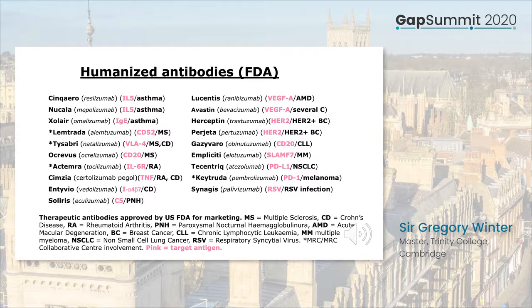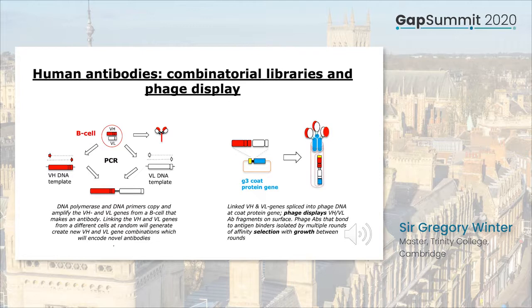In the late 1980s we hadn't known that humanized antibodies would be so successful, and I wondered whether we could find a way of making fully human antibodies. Without time to go into details, it involved making a large and diverse combinatorial library of human antibodies and then selecting those that bound to antigen.